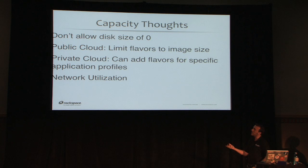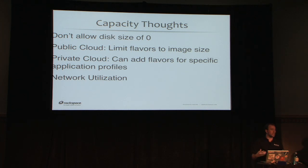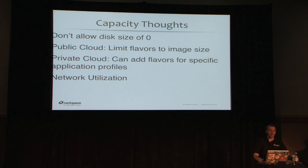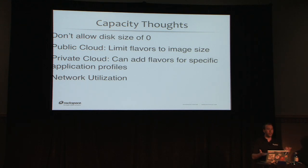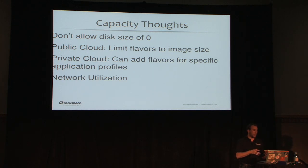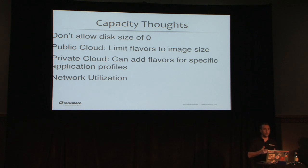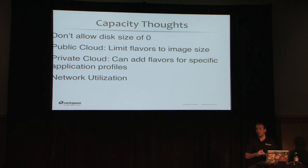My capacity planning thoughts: first, don't allow a disk size of zero. You're acting as a service provider for your internal teams and if you allow disk size zero you can't plan for capacity at all — you don't know how big image X or image Y is. Public cloud models limit flavors by resources: larger flavor means more CPUs, more RAM, more disk, which makes capacity planning easy. In a private cloud, the trick is that people add flavors for application workloads like RAM-heavy indexing or caching services.